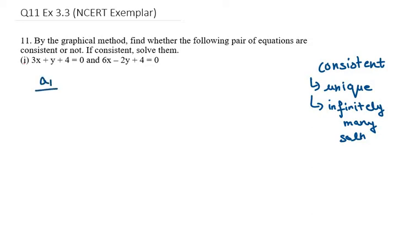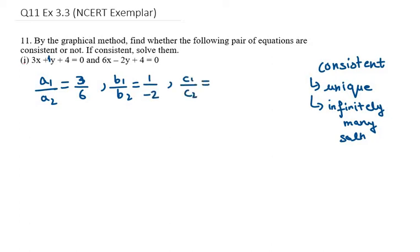Let's try for the first one. a1 over a2 is 3 over 6. b1 over b2: b1 is 1 and b2 is minus 2. c1 over c2: c1 is 4 and c2 is 4. So a1 over a2 is 1 over 2, b1 over b2 is minus half, and c1 over c2 is 1. The first two ratios are not equal, so we can say it is consistent.